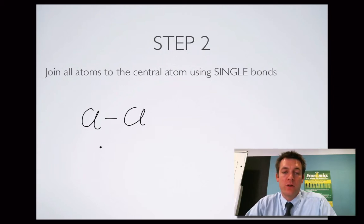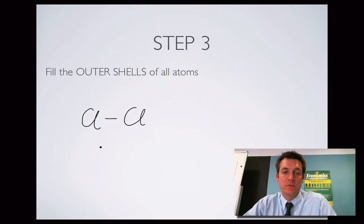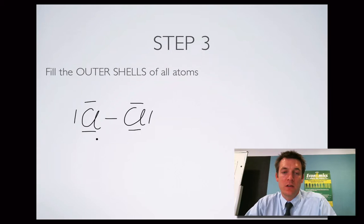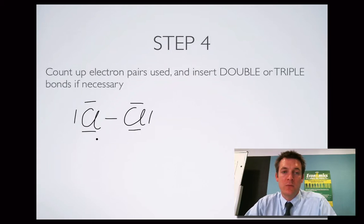We've got to fill the outer shells of all atoms. Chlorine atoms can hold eight in their outer shell, so we fill their outer shells by giving them three more pairs each. We can draw a pair of electrons as a line — here's a pair, here's a pair, here's a pair, and so on. Each chlorine atom now has four pairs of electrons in its outer shell. Counting up all the electron pairs used, we get seven, and we had seven to play with, so that one's done.